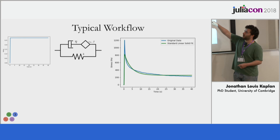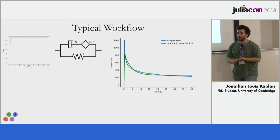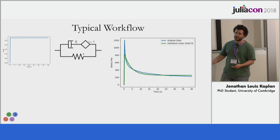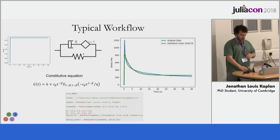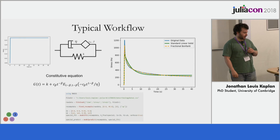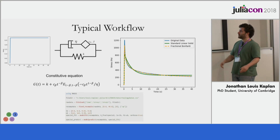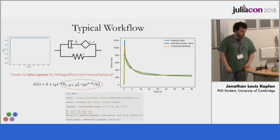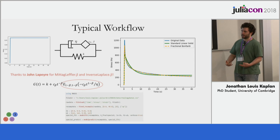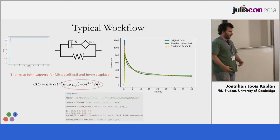So we might try a more complicated model. We've now swapped one of those springs for a spring-pot, which is a viscoelastic element derived from fractional calculus. It's useful when your material exhibits power-law behavior, which a lot of viscoelastic materials do. The constitutive equation is a lot more complicated, but the fit is much better. You could just add as many parameters as you want for a perfect fit, but it's the predict step that helps you validate whether it's really a good constitutive model for that material.